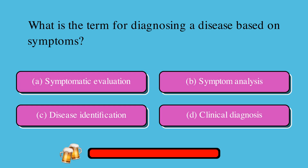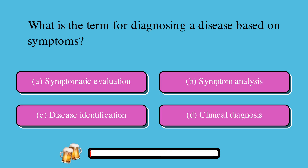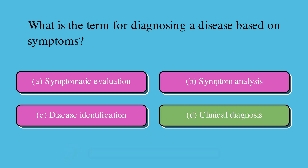What is the term for diagnosing a disease based on symptoms? A. Symptomatic evaluation, B. Symptom analysis, C. Disease identification, or D. Clinical diagnosis. The correct answer is D. Clinical diagnosis.